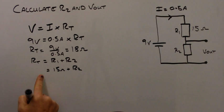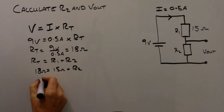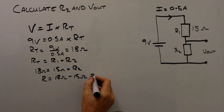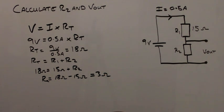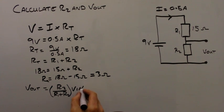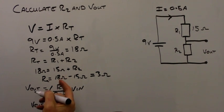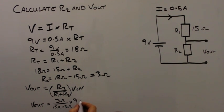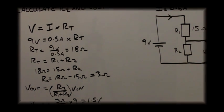We know the value of Rt, which is 18 ohms. Therefore R2 equals 18 ohms minus 15 ohms, which equals 3 ohms. We can then put that into our equation: Vout equals R2 over R1 plus R2, multiplied by V in. Therefore Vout equals R2, which is 3 ohms, divided by 15 ohms plus 3 ohms, which is 18 ohms in total, multiplied by the voltage in, which is 9. This gives us 1.5 volts.